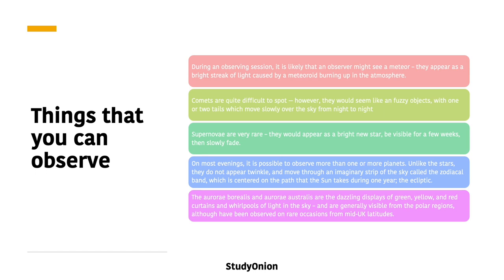On most evenings it's actually possible to observe one or more of the planets. Unlike the stars, they do not appear to twinkle, and they move through an imaginary strip of sky called the zodiacal band, which is centred on the path that the sun takes during one year — the ecliptic.